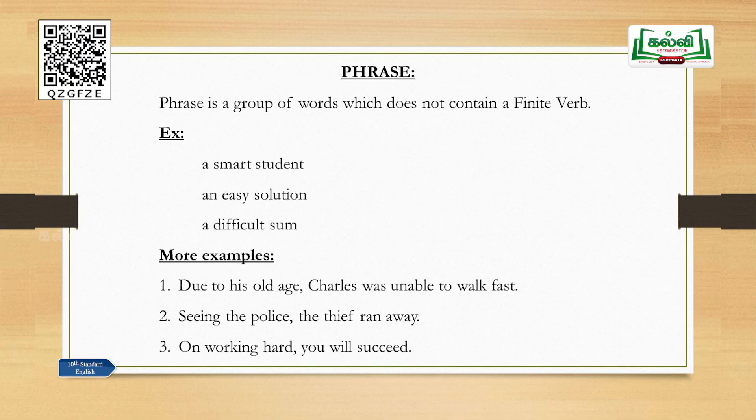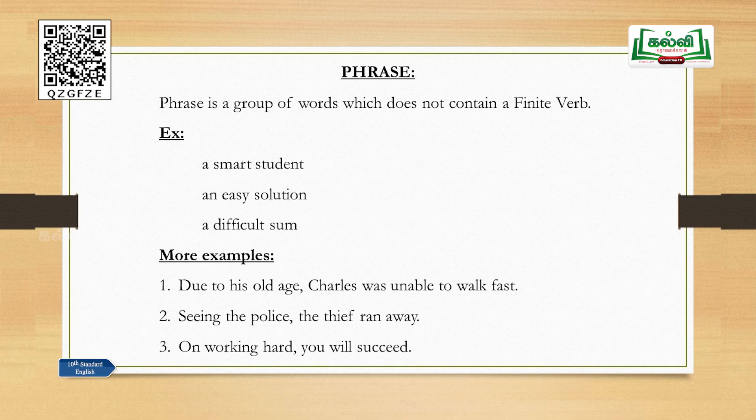To identify a complex sentence, you should know what a phrase is and what a clause is. A phrase is a group of words which does not contain a finite verb. There is no finite verb in a group of words — it is called a phrase. Examples: 'a smart student,' 'an easy solution,' 'a difficult sum.' These do not contain any verb at all, so they are phrases.